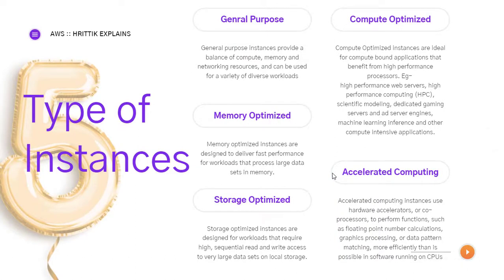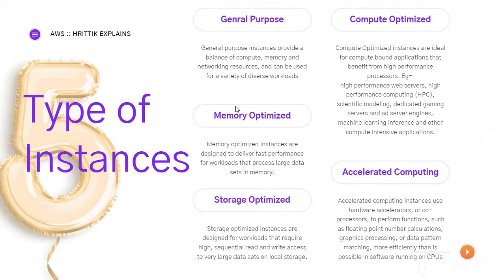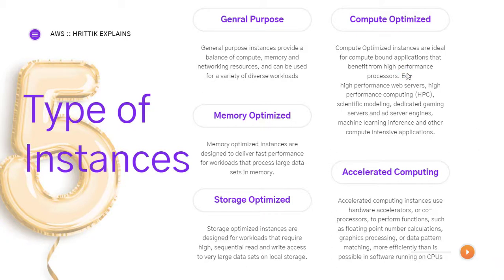Let's talk about the five types of instances. Mainly, general users require the general purpose instances, which is used to do a variety of works. There are memory optimized instances, which help us to process large data sets in memory. Storage optimized instances are designed for workloads that have sequential read and write access to very large data sets on local storage, like writing a lot of data from some server into our cloud storage. There is a compute optimized instance, which is ideal for high performance processes like a gaming server or machine learning. There is also accelerated computing, which helps us deal with scientific calculations and floating point numbers — big numbers.